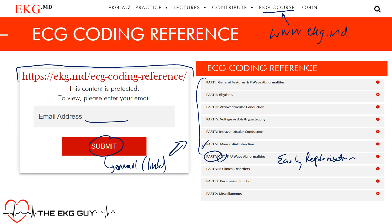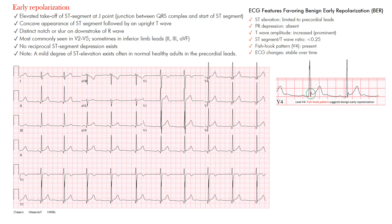Early repolarization is where you have elevated takeoff of the ST segment at the J point, so essentially ST segment elevation. This is one you want to differentiate from an STEMI, ST elevation MI, and pericarditis.